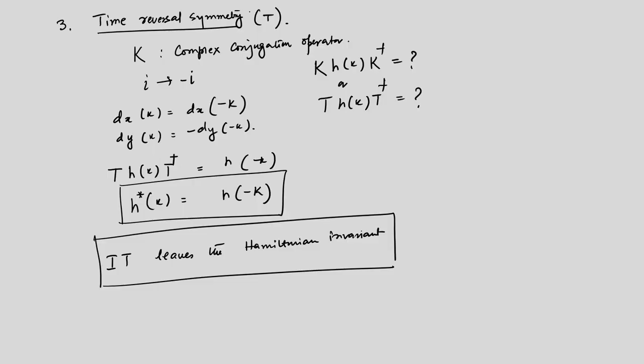The bulk behaves differently from the edges, making this a topological insulator. Before moving to more complicated two-dimensional models, we will look at another simple model called the Kitaev chain, proposed by Kitaev. It is a nice model incorporating superconducting correlations. It shows topological superconductivity — meaning the bulk states are not superconducting but the edge states are — again in the spirit that the bulk behaves differently from the edges.